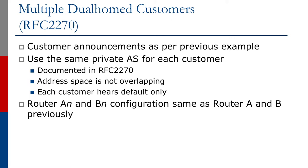We can do this because address space is not overlapping. Each customer only hears the default route, so we don't run into any issues with BGP loop detection. One customer's prefix will go to the upstream provider, but the upstream provider is only sending the default route to the other customers. There's no need for one customer to see the address space being used by another one, hence the loop detection in BGP doesn't cause any issue.